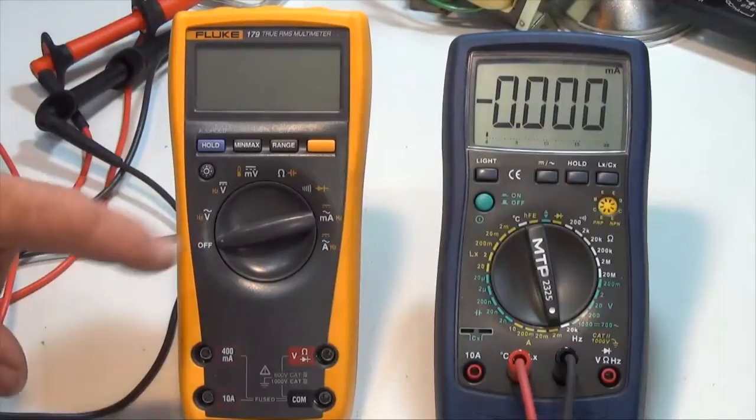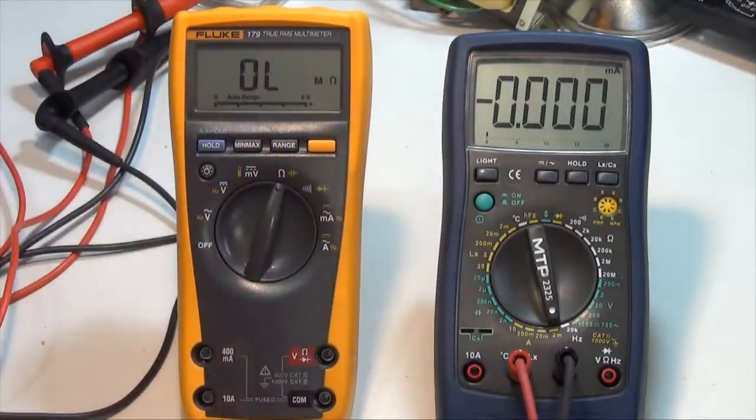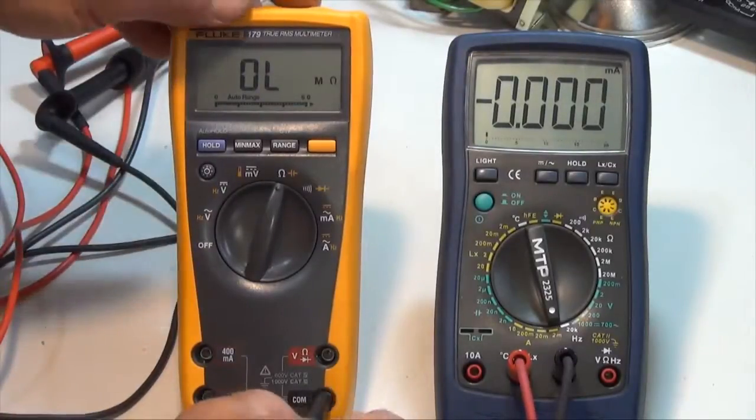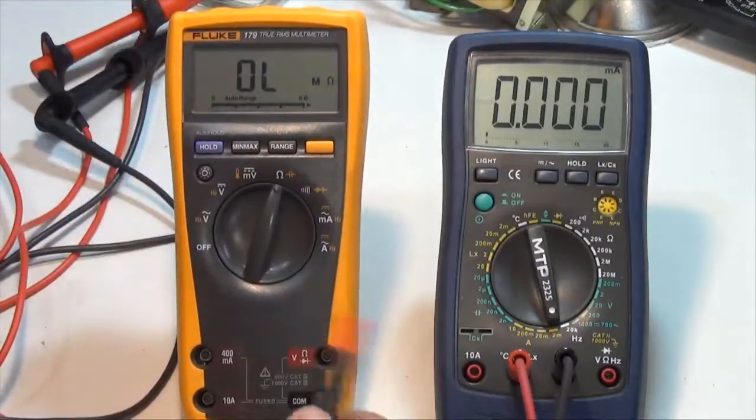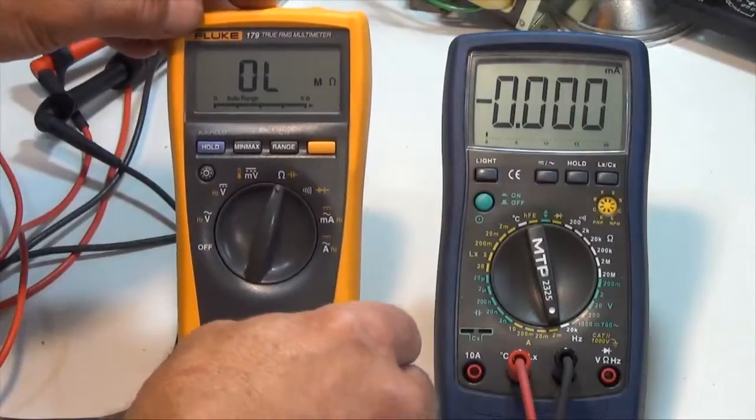I'll use the Fluke meter to measure the resistance of the MTP meter. So to do that, I'll again connect my meter leads up. I've already pre-checked them. They're good. So black into common and red into the ohms jack.